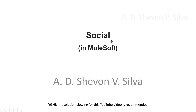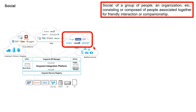Social in MuleSoft. Now we are focusing on Social. Social refers to a group of people, an organization, etc., consisting of or composed of people associated together for friendly interaction or companionship.